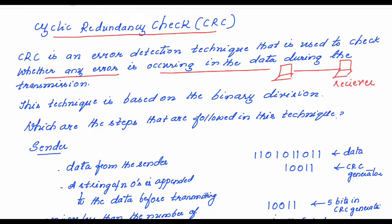This technique is first carried out at the sender side. And once the data is sent to the receiver, the receiver also carries out the cyclic redundancy check technique in order to check whether the data received is error free or not. Let us see what are the different steps in this technique.